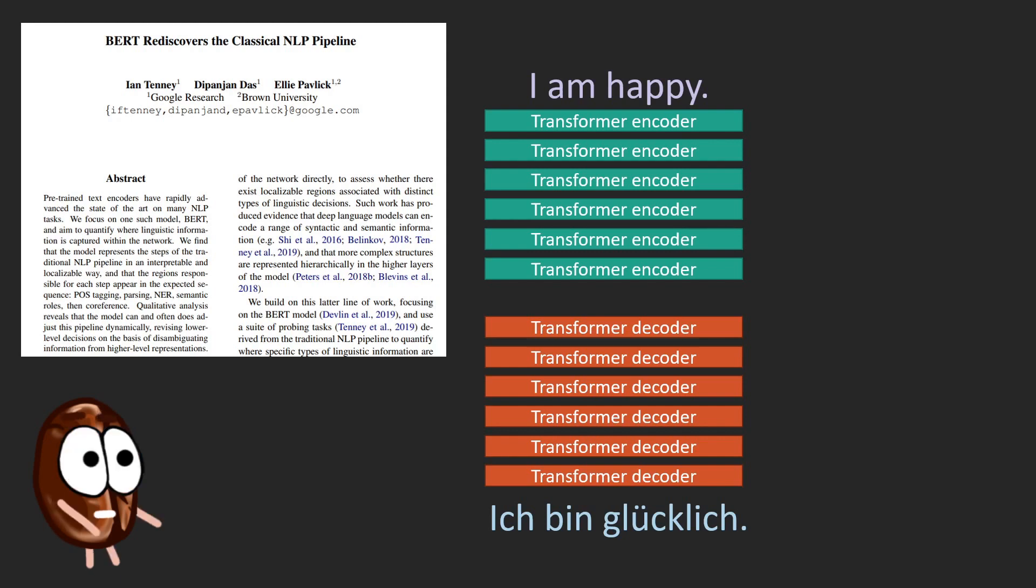To exemplify, it has been shown that these layers of the Transformer architecture are discovering the NLP pipeline. The first layers focus on identifying part of speech tags, followed by constituents, dependencies, semantic roles, and coreference. And of course, this structure is a little fuzzier in reality, but it is there.